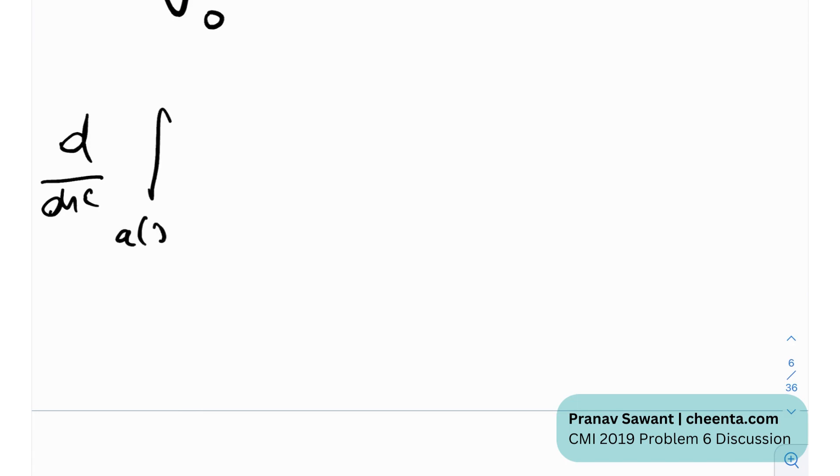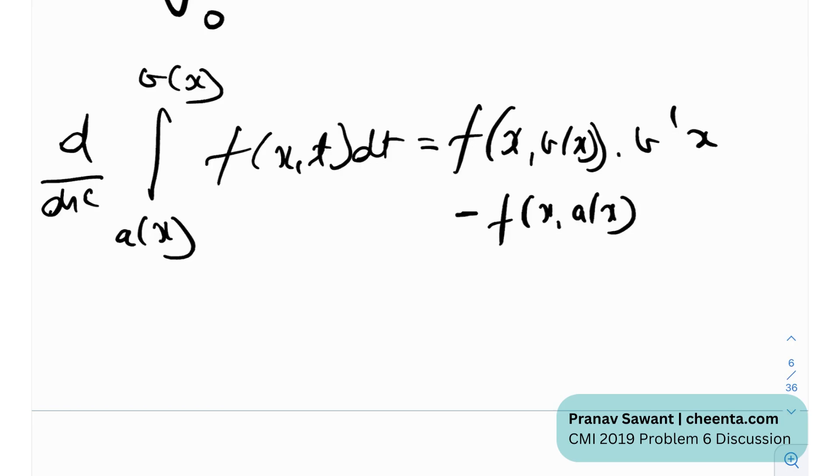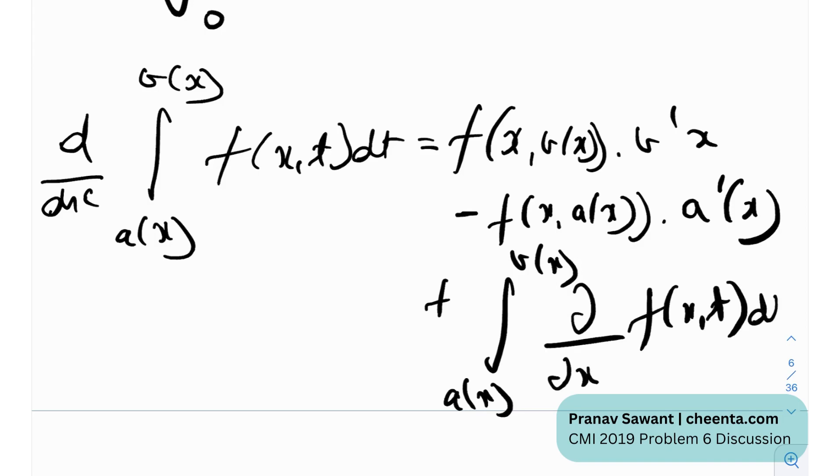So if we have the d by dx of this integral with these limits of f of x, t dt, this is simply f of x, b of x, b of x was the upper limit, times b prime x minus f of x, a of x, which was the lower limit, times a prime x, plus the integral from a of x to b of x of the partial derivative of f of x, t dt.